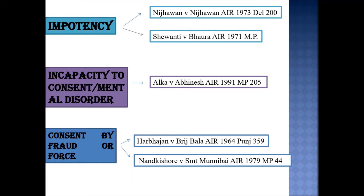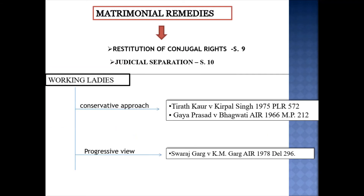Now let's move towards matrimonial remedies. There are two matrimonial remedies: restitution of conjugal rights and judicial separation. The Hindu Marriage Act 1955 embodies different remedies for redressal of grievances of the aggrieved spouse. Such remedies are available to parties who have entered into a valid Hindu marriage in accordance with the Hindu Marriage Act 1955. Beginning with the first, given in Section 9, that is restitution of conjugal rights.